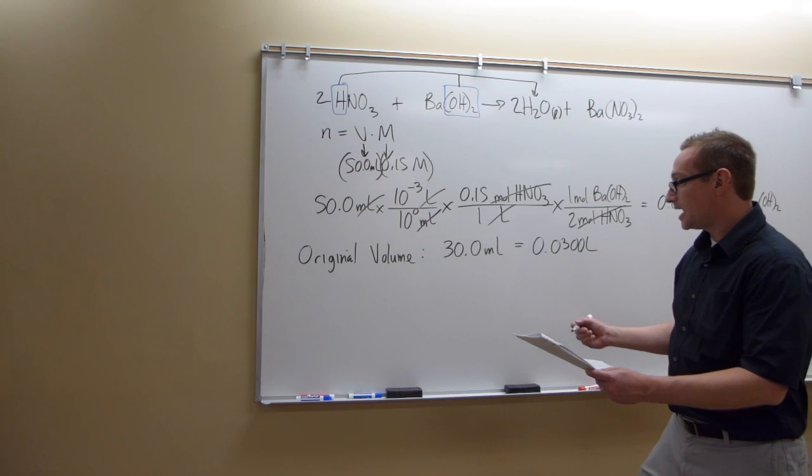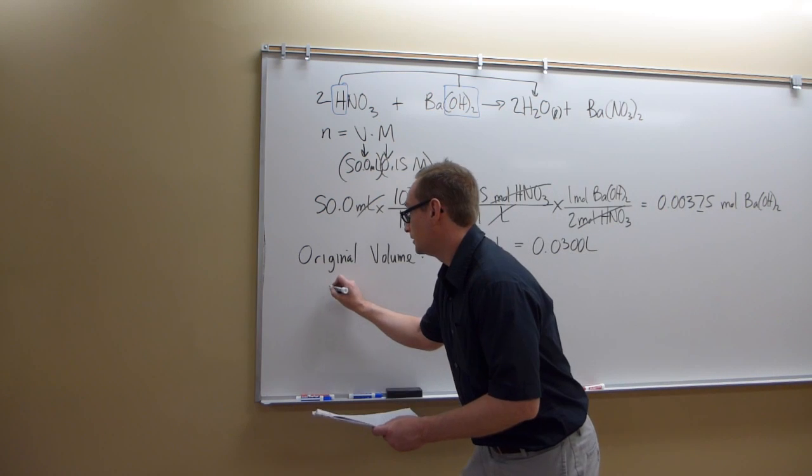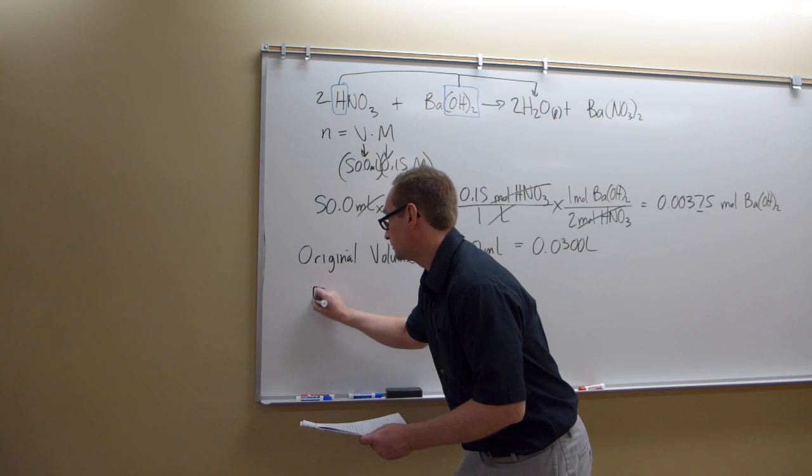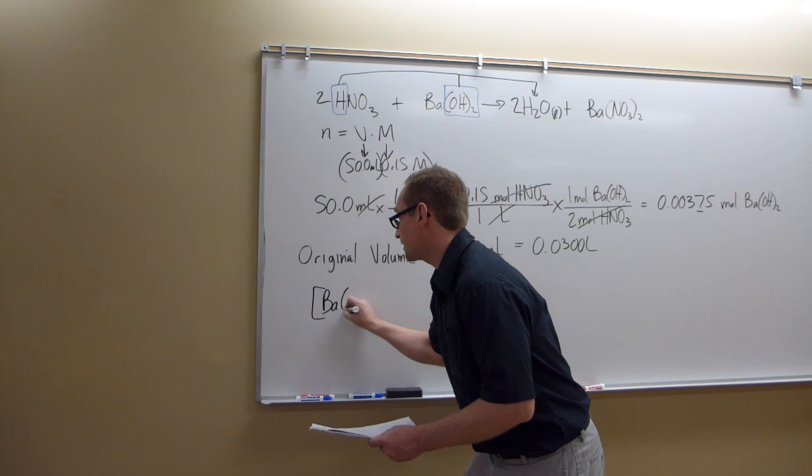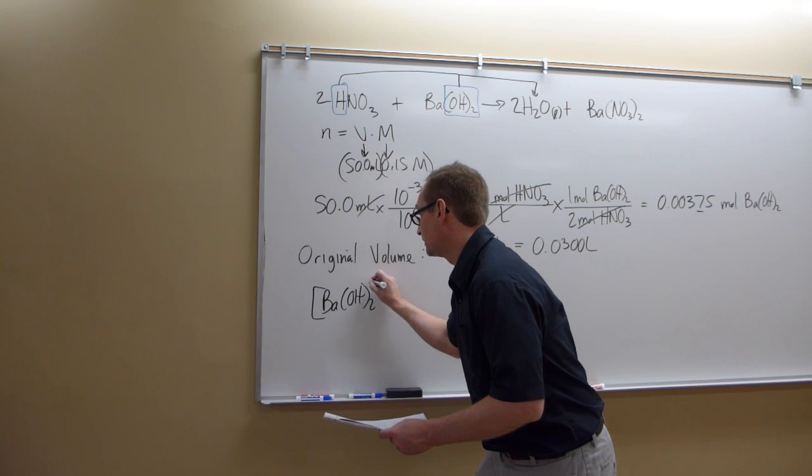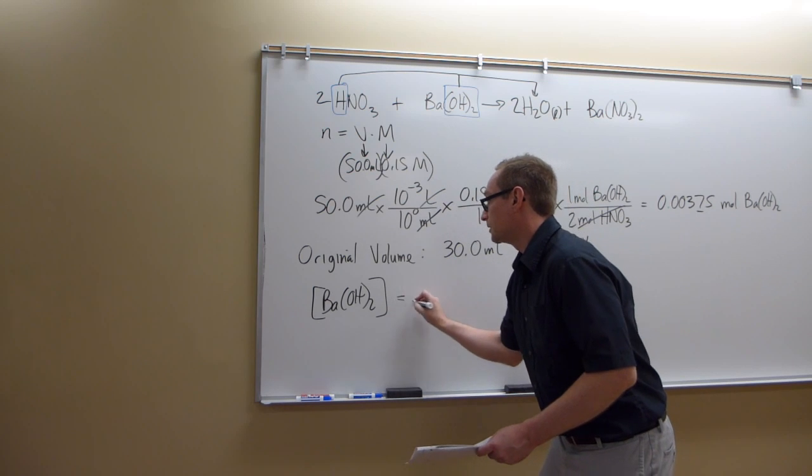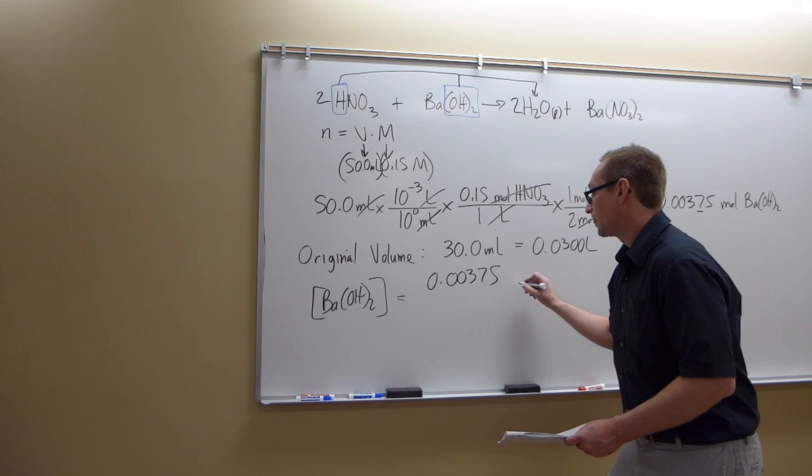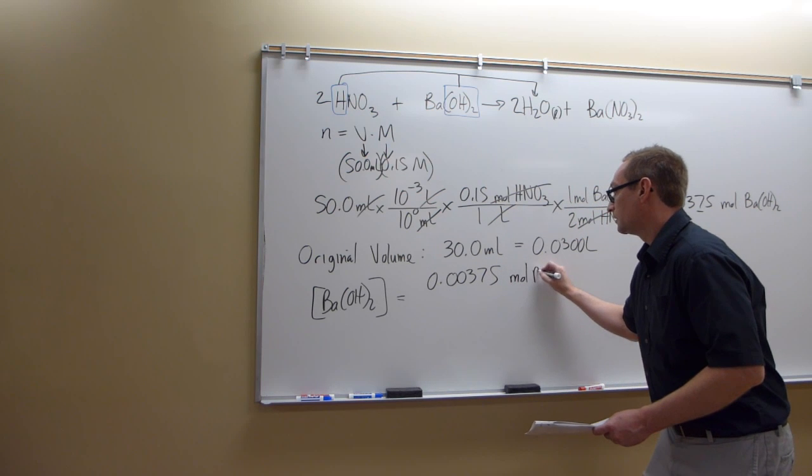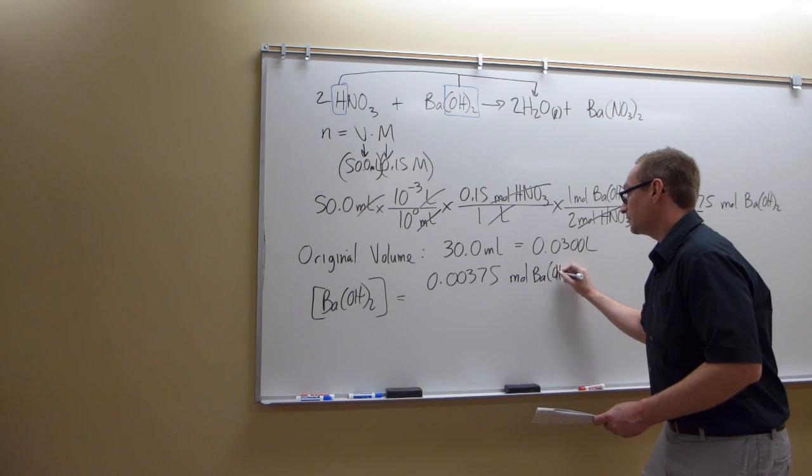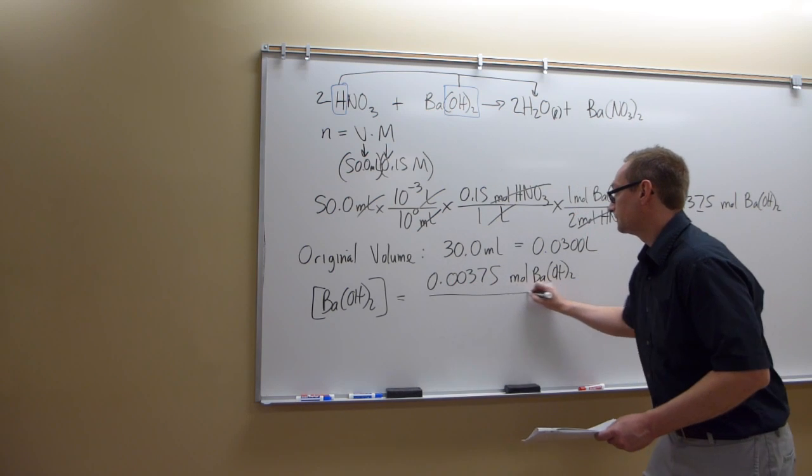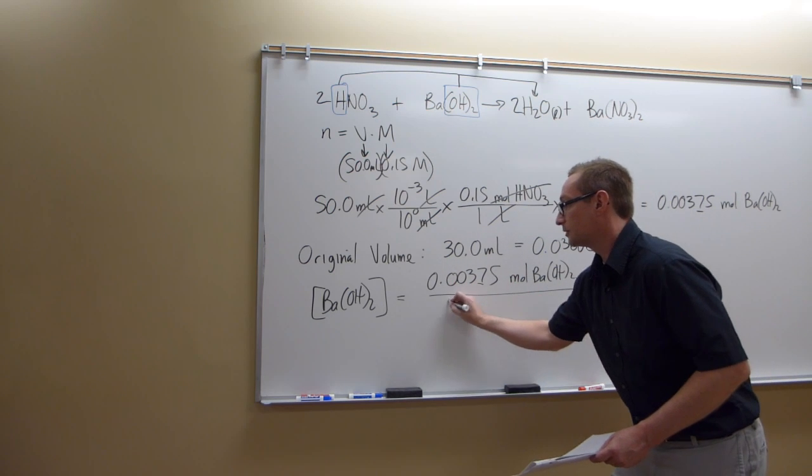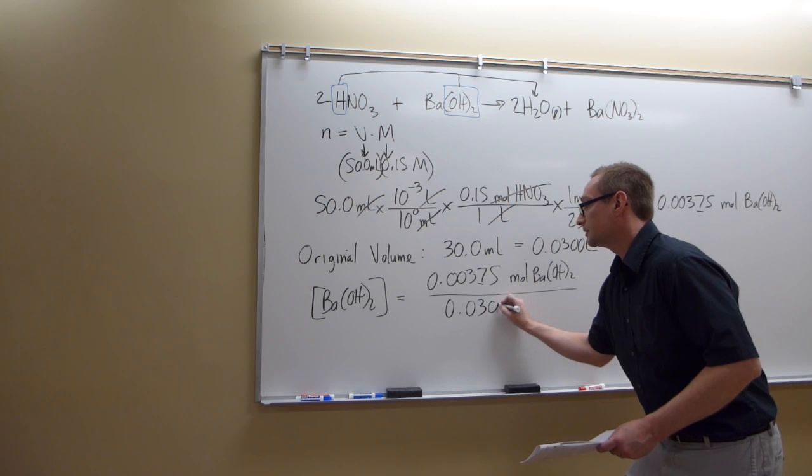Okay, so with that, we say concentration of barium hydroxide is going to be equal to 0.00375 moles of barium hydroxide per 0.0300 liters.